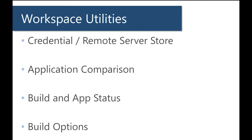Workspace utilities look at multiple applications. I'll focus on build app status and build options, as those are the most important. Occasionally I use application comparison — it's helpful when you have two versions of an application and want to see what's different, but it's not as detailed as a diff. It will let you know there are high-level differences between two applications.